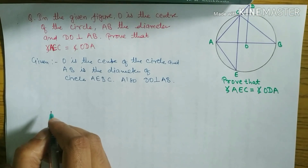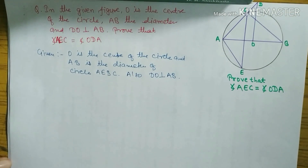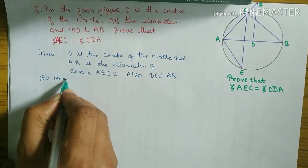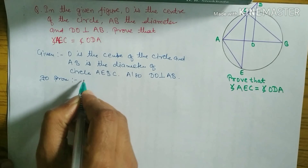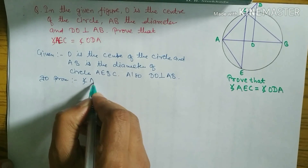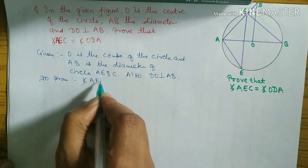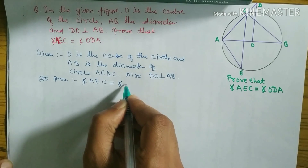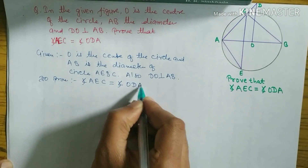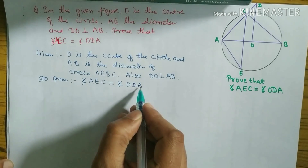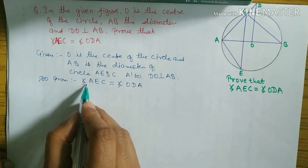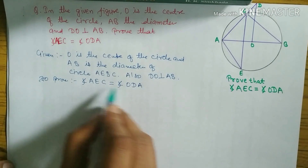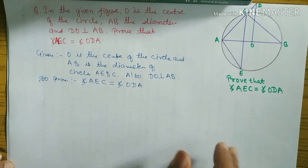To prove: angle ACE is equal to angle ODA. These two angles are equal — that is what we have to prove.